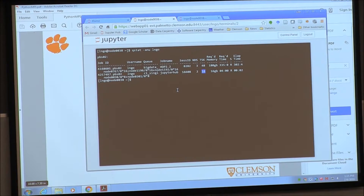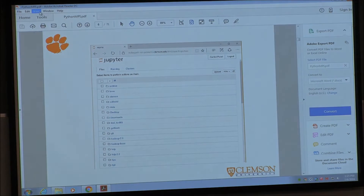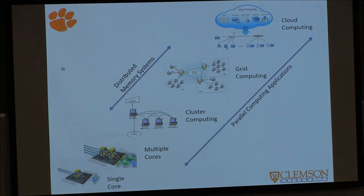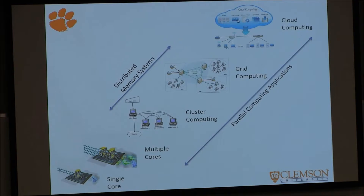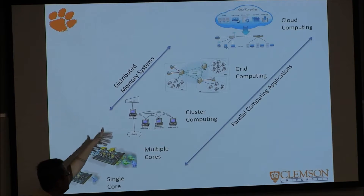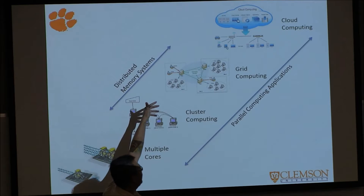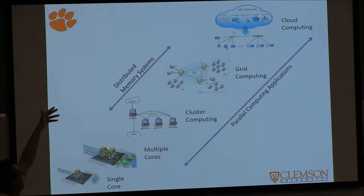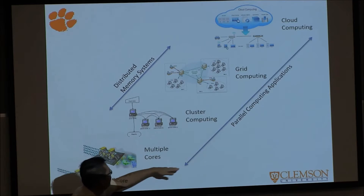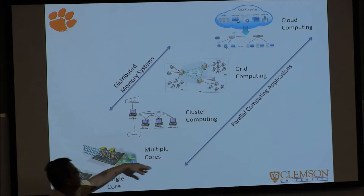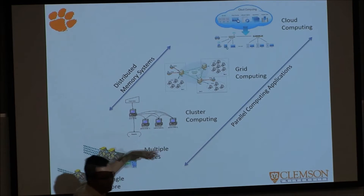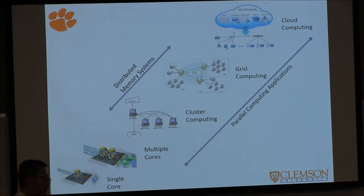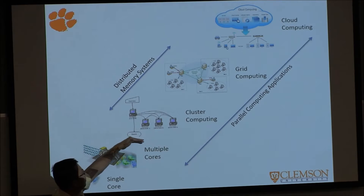Let's leave the terminal there for the moment and get back to lecture mode. Computing hardware has developed significantly over time. We started with machines with a single core, then Intel came out with CPUs with multiple cores. We started connecting computers together from different locations, and now there is cloud computing. Anything with multiple cores should be able to support parallel computing applications.